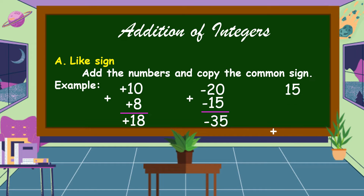Another example: 15 plus 8. Notice that 15 and 8 have no sign. If there is no sign, it is understood as positive. We can write the positive sign or not for counting numbers. So, 15 plus 8 is equal to 23, which is considered positive.